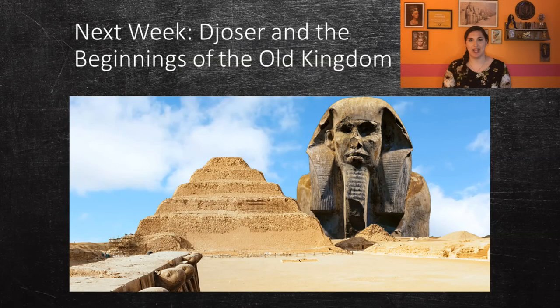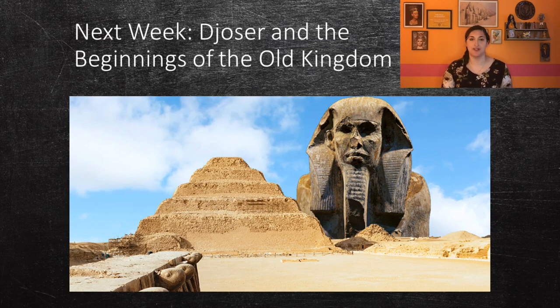The tight robe that Khasekhemwy wears in both statues may be related to a Heb-Sed ceremony, which we'll talk about next week. Khasekhemwy had one son named Djoser, who buried his father in Saqqara. Next week we are going to start with Djoser, who was the first king of the Old Kingdom. Thanks for watching, and stay safe.